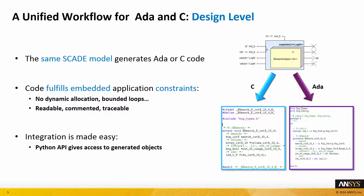Integration is made easy with a traceability file that gives the generated data in an XML format. An API in Python gives an object-oriented access to these data to help with developing any integration code, or for any other purposes left to the user's needs.